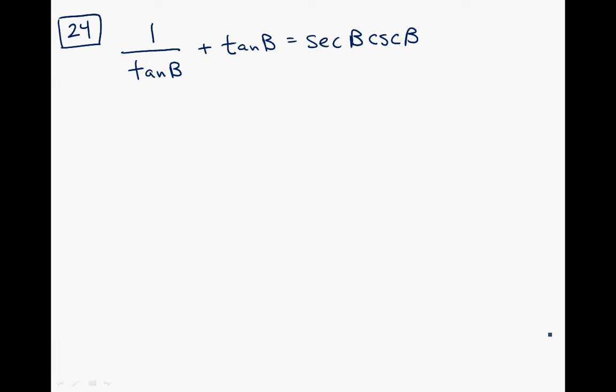I'm looking at this one right here. Not too much is jumping out at me. I don't see a Pythagorean identity. I don't see any opportunities for factoring. So I'm going to try something that I often try, which is writing things in terms of sine and cosine.